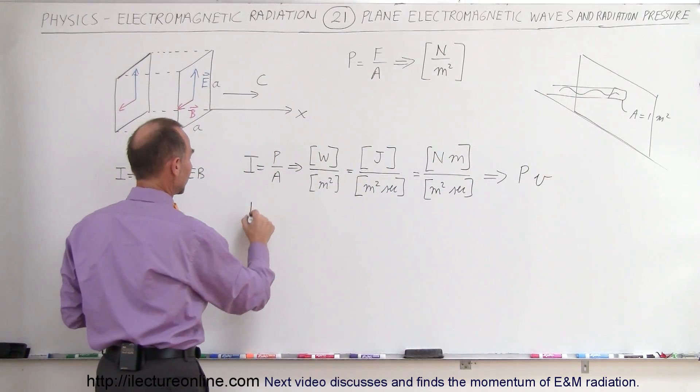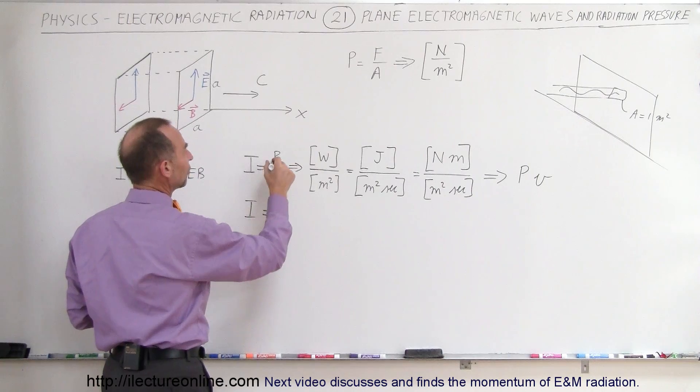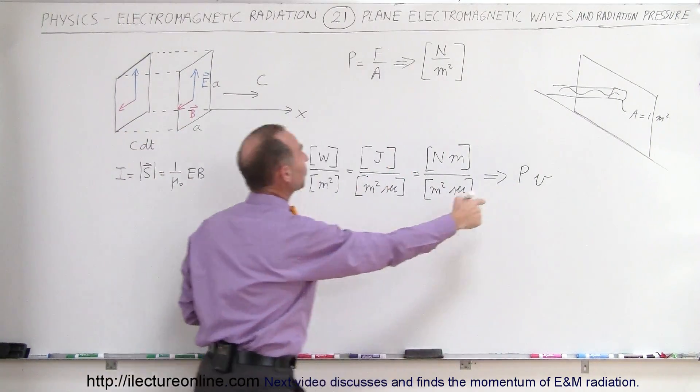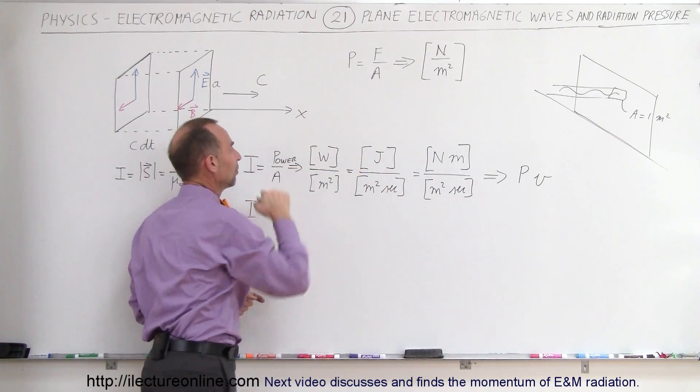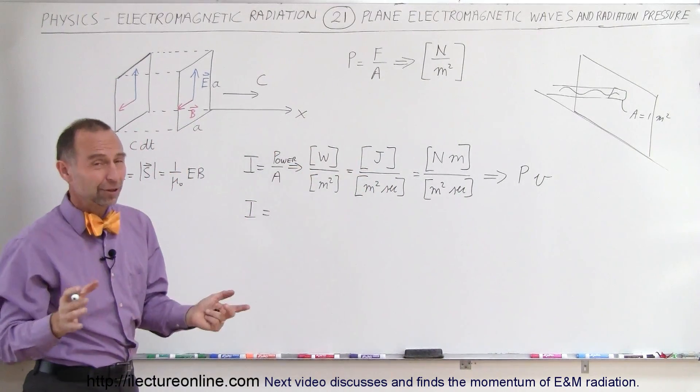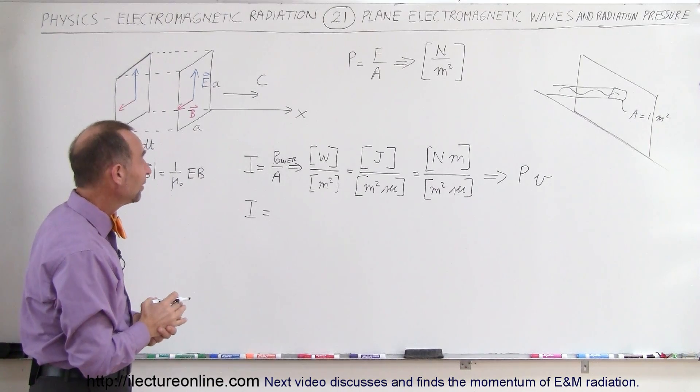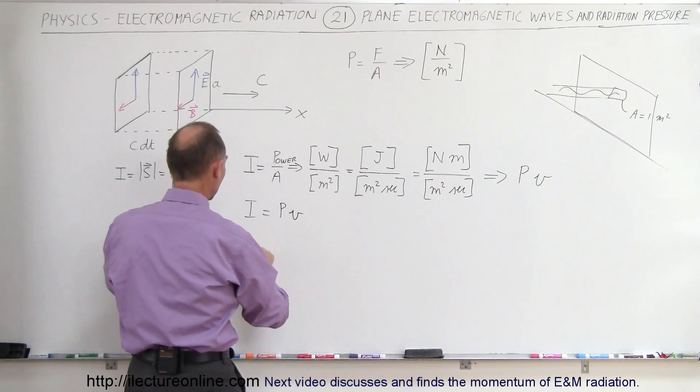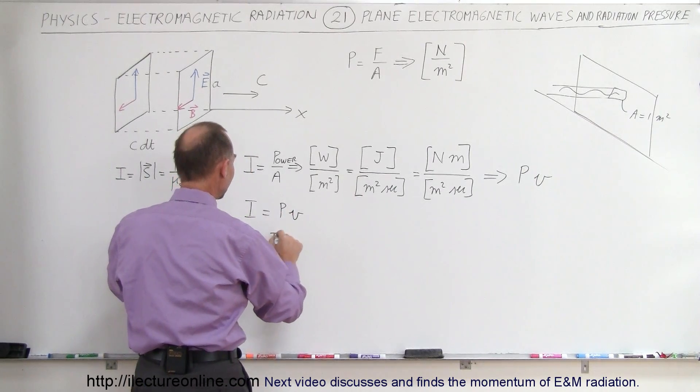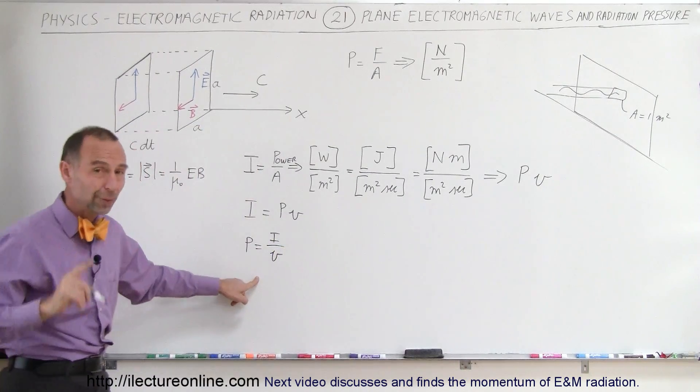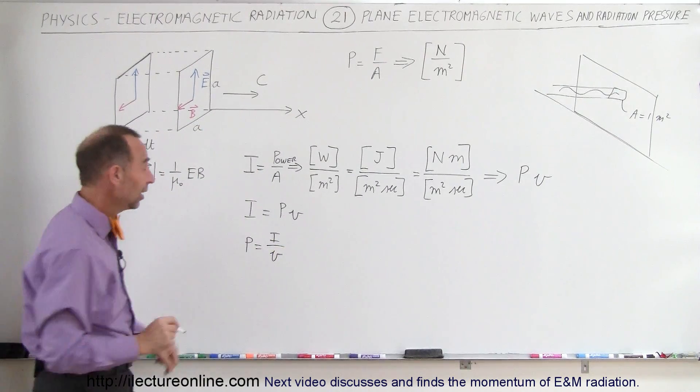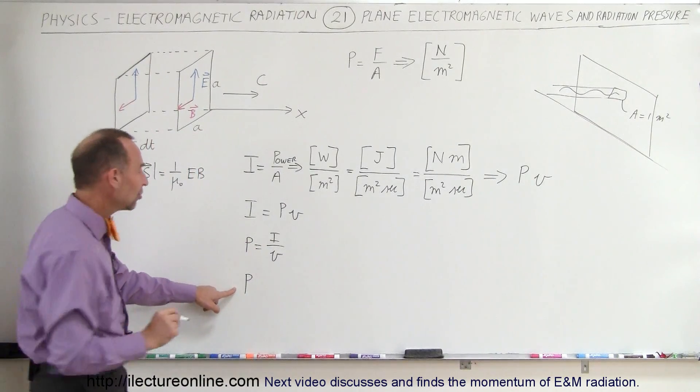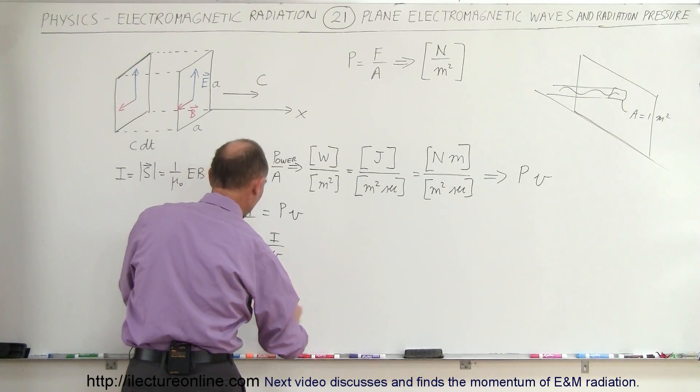So now let's write that down. Intensity is equal to pressure. This is power and this is pressure. So this P stands for pressure, not stands for power. Sometimes we use the same letter for two different things and that gets confusing. So intensity is equal to pressure times velocity, which means pressure is equal to intensity divided by velocity. With radiation, the velocity is the speed of light, which means that the pressure caused by electromagnetic radiation is equal to the intensity divided by the speed of light.